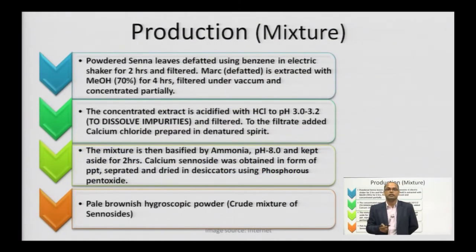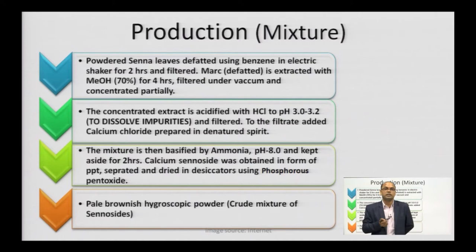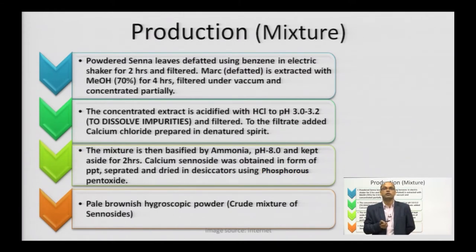Moving on to the isolation part — how we can isolate senosides in the mixture form. First, we took the powdered senna leaves and defatted it to remove the fatty content. We defat it using benzene in an electric shaker for two hours, then filter. The defatted content is then extracted with 70% methanol for four hours using a Soxhlet apparatus. The mixture is then filtered under vacuum and concentrated partially using a rotary vacuum evaporator.